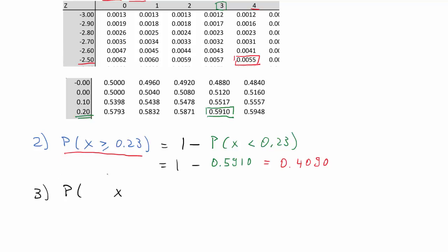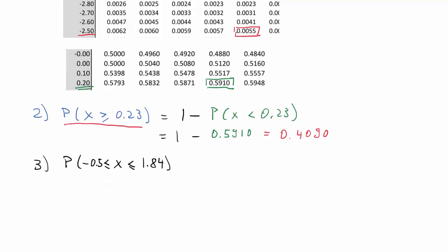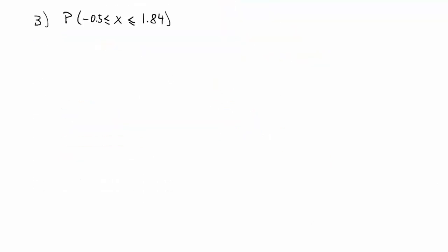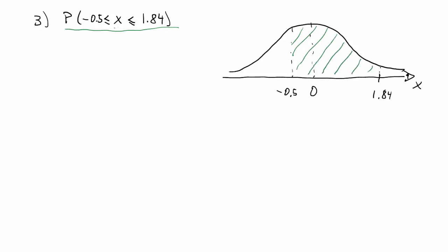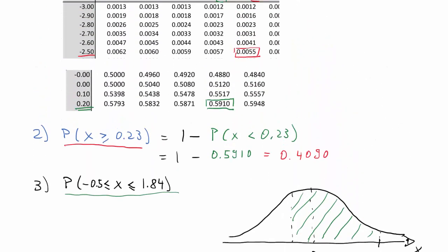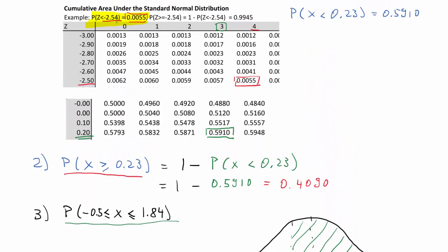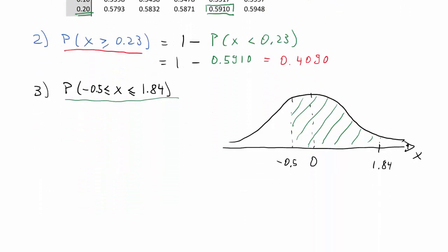For part 3, we want the probability that this standard normally distributed random variable takes a value between negative 0.5 and 1.84. Looking at this graphically, we sketch a PDF for X centered around 0, mark off negative 0.5 and 1.84, and we are interested in the area between these two markers. Off the table, we can only read probabilities of the smaller-than type, so we need to translate that problem into smaller-than type problems.